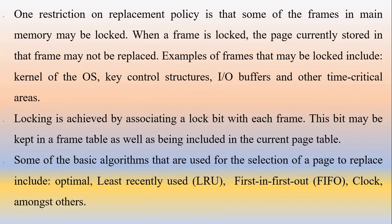One restriction on replacement policy is that some frames in main memory may be locked. When a frame is locked, the page currently stored in that frame may not be replaced. Examples of frames that may be locked include the kernel of the OS, key control structures, I/O buffers, and other time-critical areas. Locking is achieved by associating a lock bit with each frame. This bit may be kept in a frame table as well as being included in the current page table.